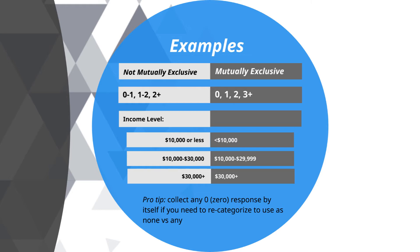On the right side you'll see this problem alleviated. These categories are now mutually exclusive: less than $10,000; $10,000 to $29,999; and then $30,000 plus. When designing categorical variables, make sure your levels are mutually exclusive — it should not be possible for people to fall into two different response options at the same time.